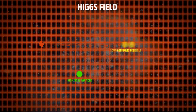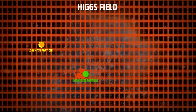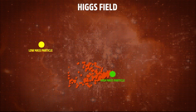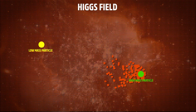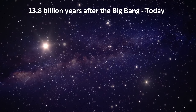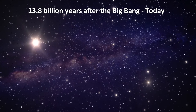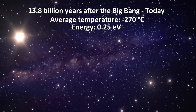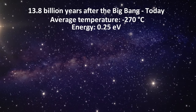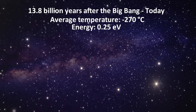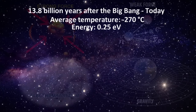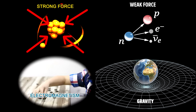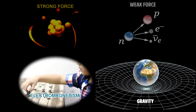The Higgs field also exists at this stage. How do we know? Because about 100 giga electron volts was needed to create the Higgs boson, and this can be done at the LHC. Fast forward to today, 13.8 billion years later, where the average temperature of the universe is negative 270 degrees Celsius, and energy is on the order of 0.25 electron volts.